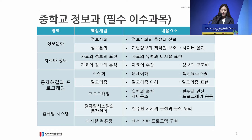As mentioned before, information education is the basics of AI. Before taking AI subjects at high schools, students first take the information course at middle school. At middle school, the subjects are categorized into four areas. In the first domain, they learn about information culture. In the second category, they learn about data and information.